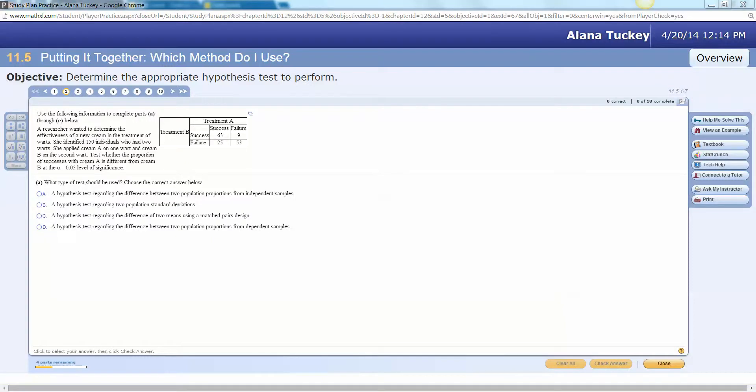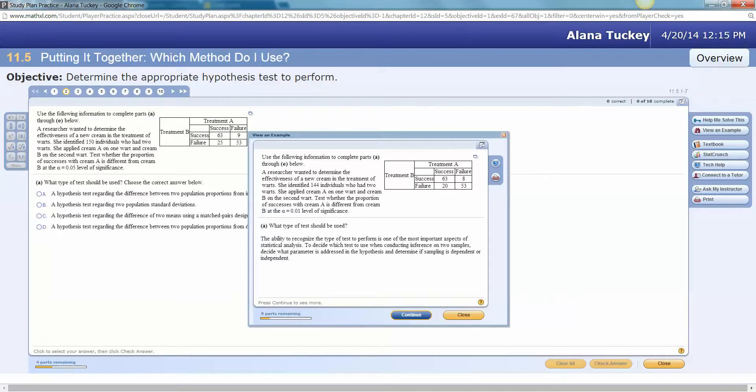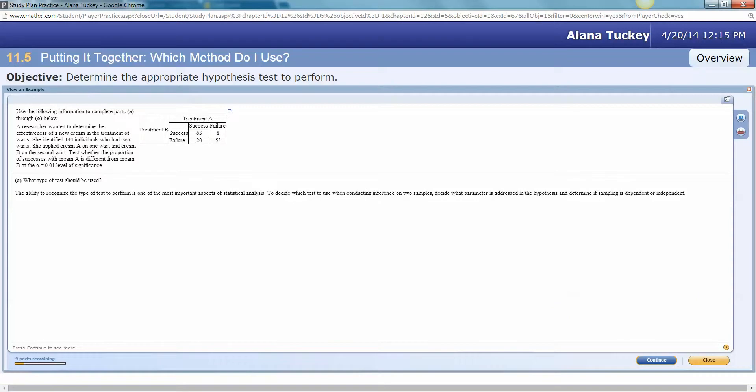Hello there, this is Alana Tucky and I've received a question about this problem which is 11.5 number one from my math lab. So let's look over how to do it. Let me click on view an example. We have a researcher who wanted to determine the effectiveness of a new cream in the treatment of warts. She identified 144 individuals who had two warts. She applied cream A on one wart and cream B on the second wart. Test whether the proportion of successes with cream A is different from cream B at the 0.01 level of significance.